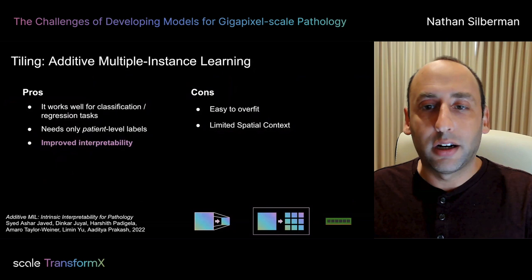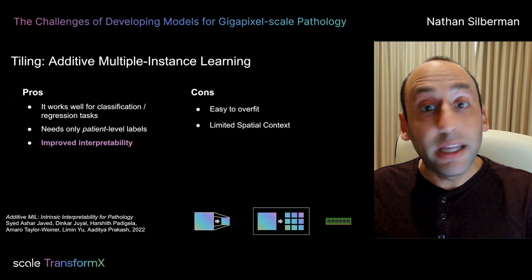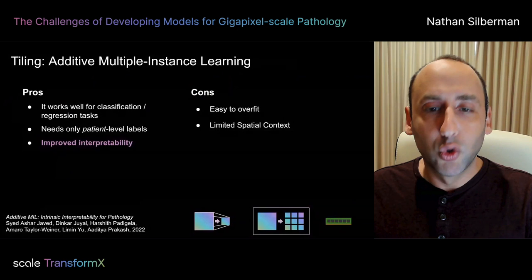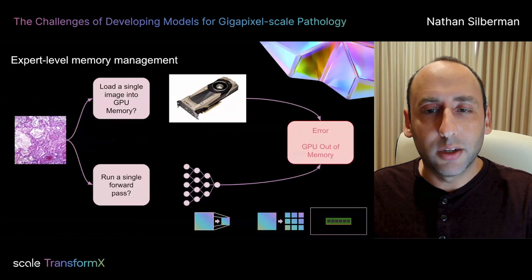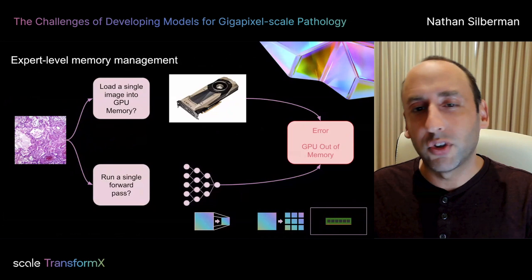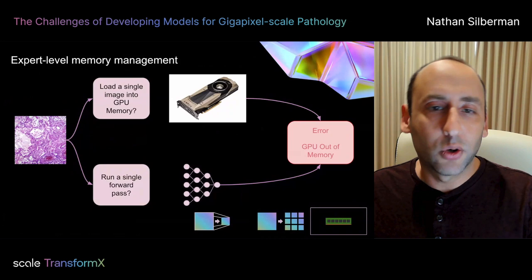Ultimately, additive MIL is just one extension of many really great tile-based solutions meant to deal with the scale involved in pathology images. However, like many of these tile-based approaches, it doesn't totally overcome the overfitting problem, nor the problem of dealing with limited spatial context. Let's return to the basic problem: we know that when we try to load an entire image into GPU memory, we're going to run into problems, and that training or inference on the GPU gets totally swamped with images of this scale.